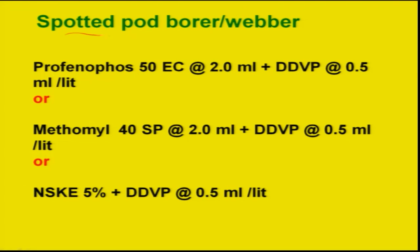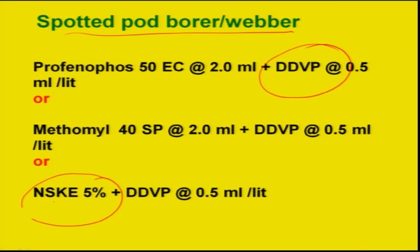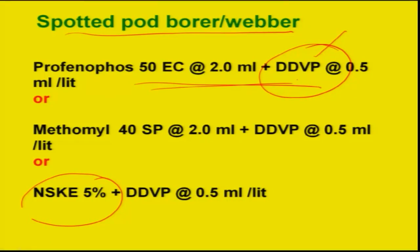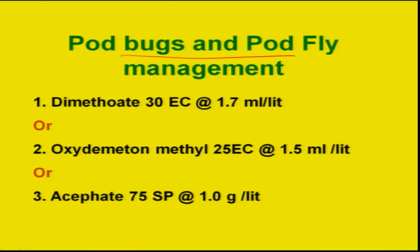In situations where spotted pod borer (Maruca) damage is present, a specific recommendation is to add DDVP (dichlorvos), which is a fumigant, mixed with any recommended insecticide such as profenofos, methomil, or neem seed kernel extract. The addition of DDVP as a fumigant is effective because Maruca webs and remains inside the web while feeding — the fumigant makes the larvae come out, and then the contact insecticide works. In situations where pod bug and pod fly are a problem, systemic insecticides at the listed dosages should be incorporated in the IPM.